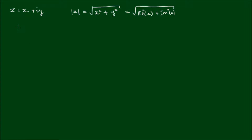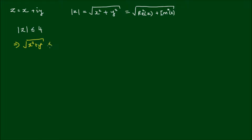If we have the condition that the modulus of z is less than or equal to 4, this means that all complex numbers satisfying this condition must be at a distance of 4 or less units from the origin. Mathematically, this is expressed as the square root of x squared plus y squared is less than or equal to 4. Squaring both sides gives x squared plus y squared is less than or equal to 16.